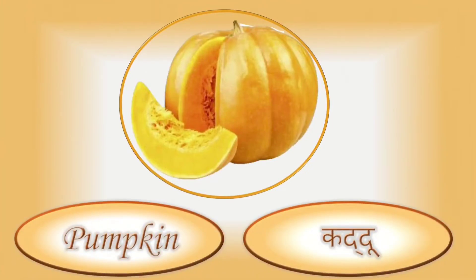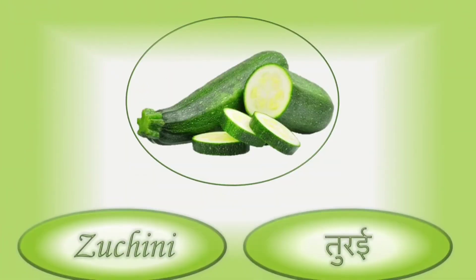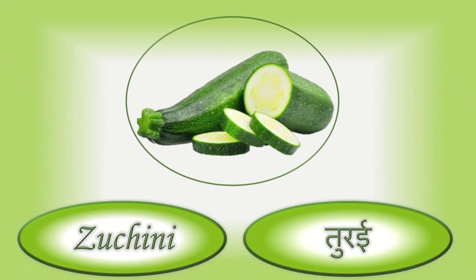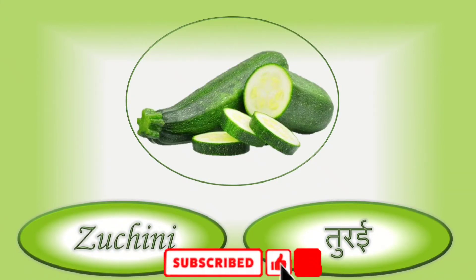Pumpkin — pumpkin means kaddu. Zucchini — zucchini means turai ya tori.